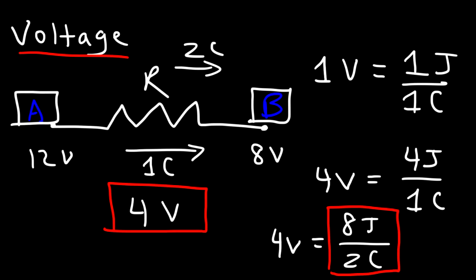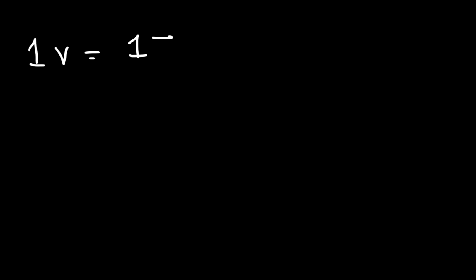The greater the amount of charge that passes through the resistor, the more work will be done on it. Voltage is a ratio — it relates the work done by the charges with the amount of charge flowing through a resistor. So one volt can be described as one joule of work done per one coulomb of charge, or one joule of electric potential energy per coulomb of charge.